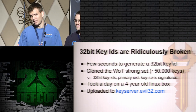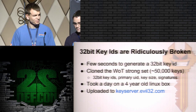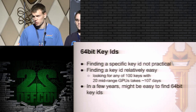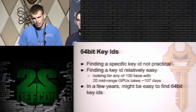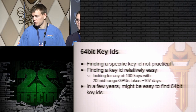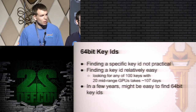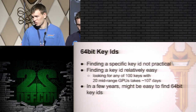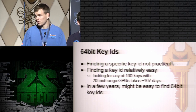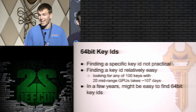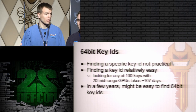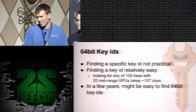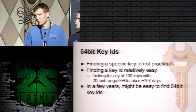Another way to specify a key from GPG's key servers is with a 64-bit key ID. This is the obvious path forward to make things more secure — use more bits — and this option is already available. At the moment, finding a specific key with a 64-bit key ID is not very practical. However, if you wanted to find a collision among 100 keys — say a list of 100 different software packages — given 20 GPUs looking for 100 keys, it would take approximately 107 days. So it's fairly strong at the moment, not practically broken, but in the long run this isn't going to hold up.